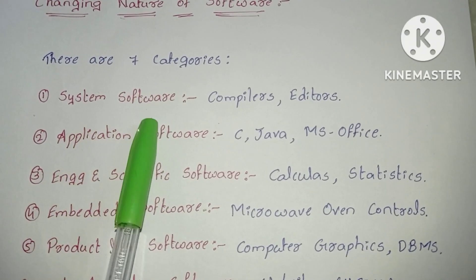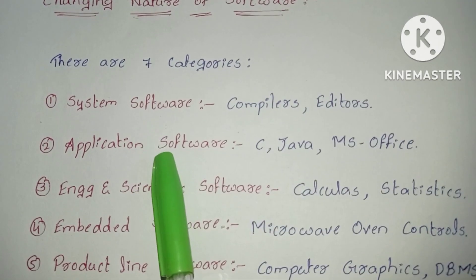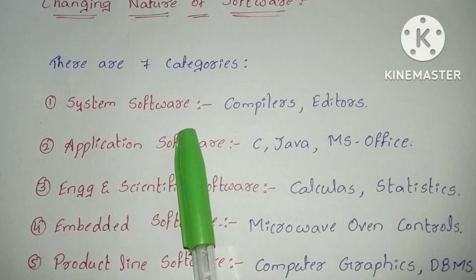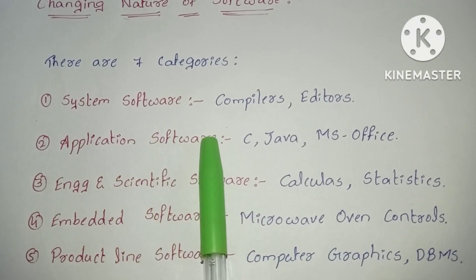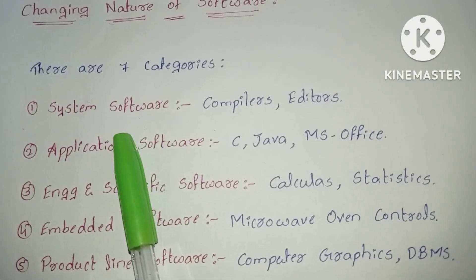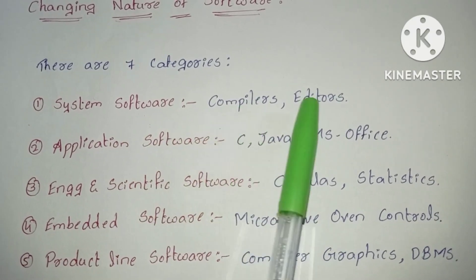The first one is system software. System software is a collection of programs written to provide services to other programs. The examples for system software are compilers and editors.